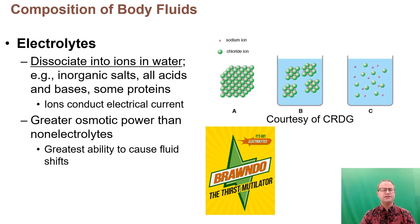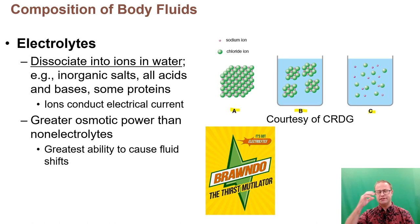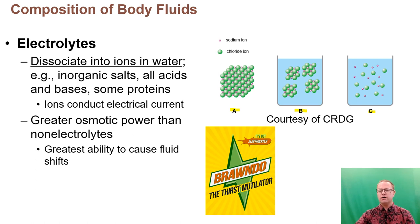The second type of solute found in body fluids is electrolytes — compounds that dissociate into positively and negatively charged ions when immersed in water. For example, sodium chloride, organized in a crystal lattice, breaks down in water and dissociates into positively and negatively charged ions. This is why we call it an electrolyte — it can help carry an electrical current. Electrolytes are important because they generate a great amount of osmotic power, much more than most non-electrolytes.